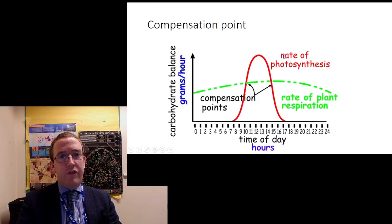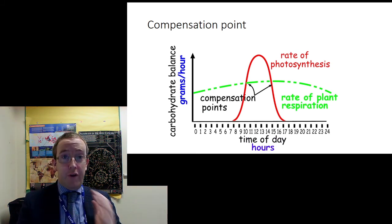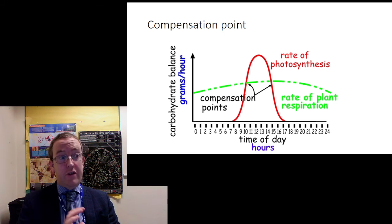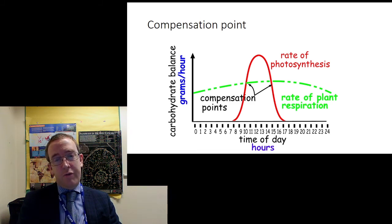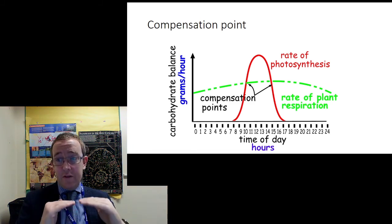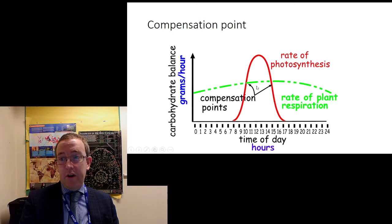And the last thing I'm going to introduce to you is this idea of a compensation point, which you may do an experiment to derive. Essentially, plants do photosynthesis and they do respiration, because they're alive. So, in the dark, they're doing more respiration than photosynthesis. And in the light, they're doing more photosynthesis than respiration. Respiration stays at a fairly steady rate. The reason there's this little bulge in it is purely temperature, because respiration is an enzyme-controlled reaction and it's warmer in the day. But as you can see, it's pretty constant.